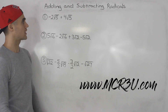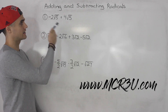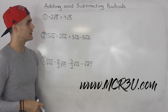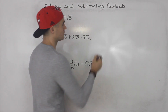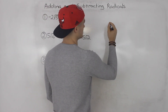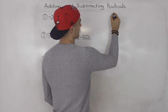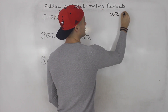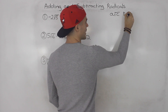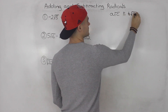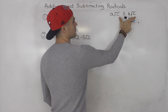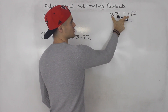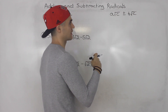Patrick here, moving on with radicals. We're going to talk about adding and subtracting radicals, and I've got three examples we're going to go over. The general rule with adding and subtracting radicals is that in order to add or subtract radicals, the radicals have to be the same, and then you can add or subtract the coefficients that are in front.